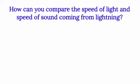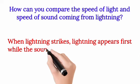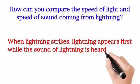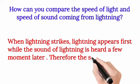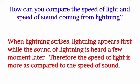Question 3: How can you compare the speed of light and speed of sound coming from lightning? (بجلی کی کڑک سے آپ روشنی اور آواز کی speed کا موازنہ کیسے کریں گے؟) Answer: When lightning strikes, the light appears first while the sound of lightning is heard a few moments later. Therefore the speed of light is more as compared to the speed of sound.